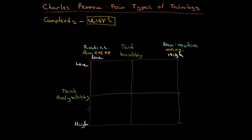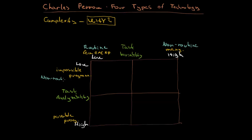What kind of task is it that has low possibility for programming, or where it is impossible to program? That represents impossible programming. On the other side, programming is highly possible. So we have possible programming. Accordingly, low analyzability corresponds to non-routine tasks, while high analyzability corresponds to routine tasks.